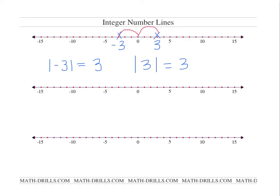Another example. Let's say we have negative 10. Negative 10 is that number on the number line. Its opposite would be positive 10. And the absolute value of negative 10 would actually be 10, because there are 10 spaces between negative 10 and 0. So its absolute value is 10.